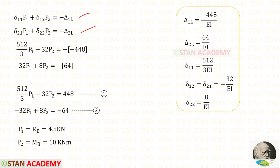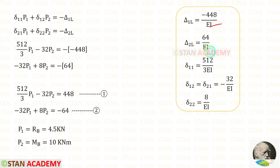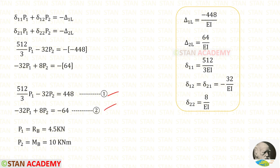In these two equations we have found all the displacements. Let us apply all of them — no need to consider EI because it will be eliminated. Solving these two equations using a calculator, we get the two values: P1 = RB = 4.5 kN and P2 = MB = 10 kNm.